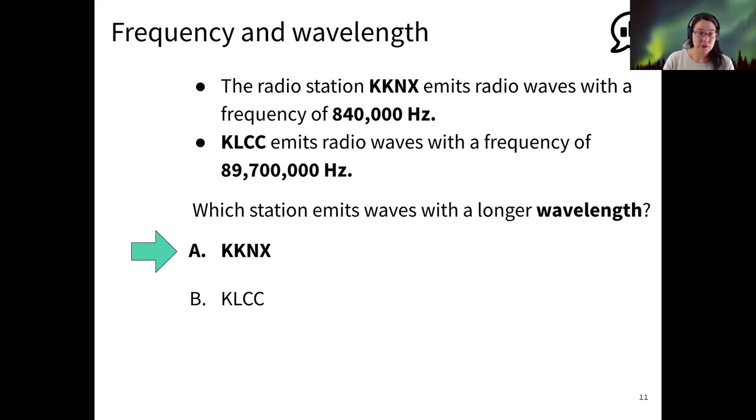So the answer is A, KKNX, the longer wavelength station. We can think of that as having a lower frequency. It makes a peak less often than the short wavelength KLCC station. So KLCC has here a short wavelength, a high frequency of oscillation. And KKNX has a low frequency of oscillation and therefore a longer wavelength.